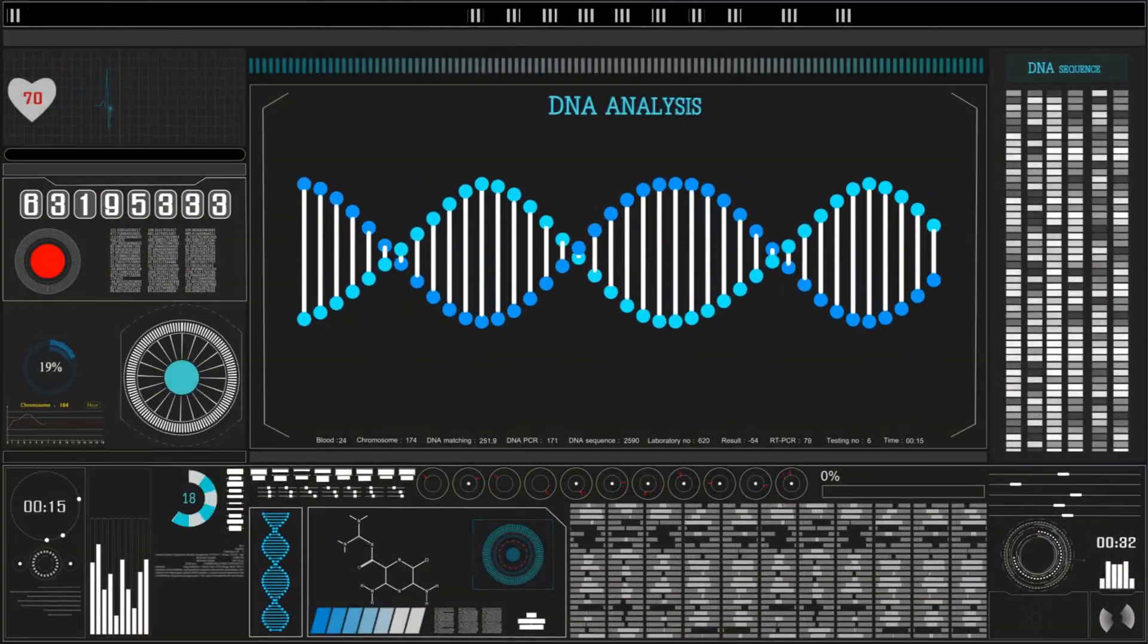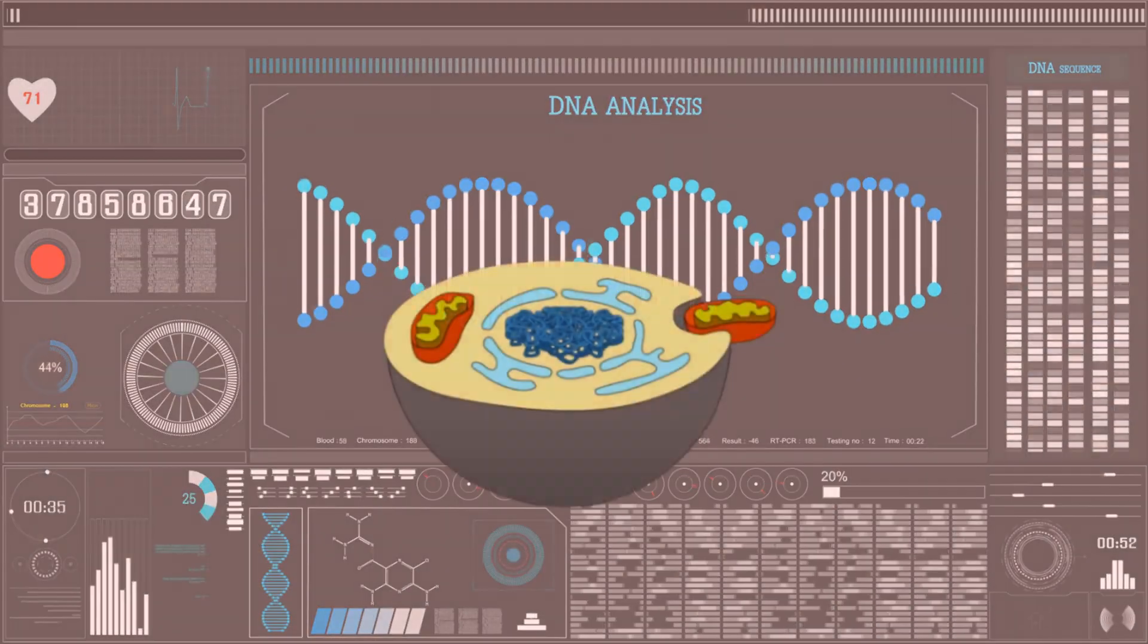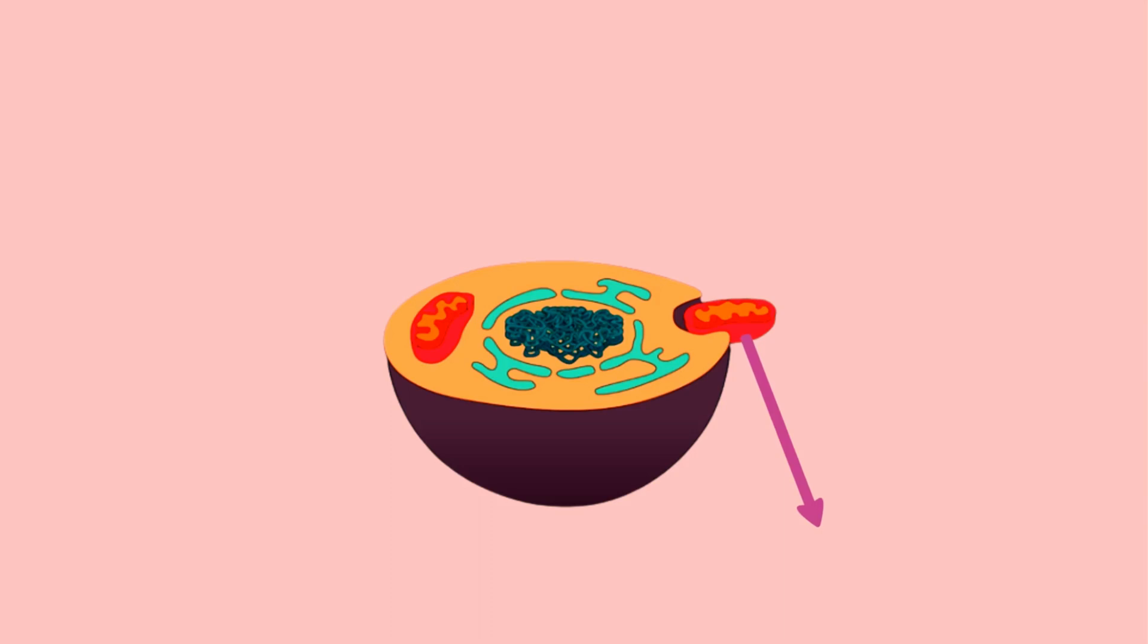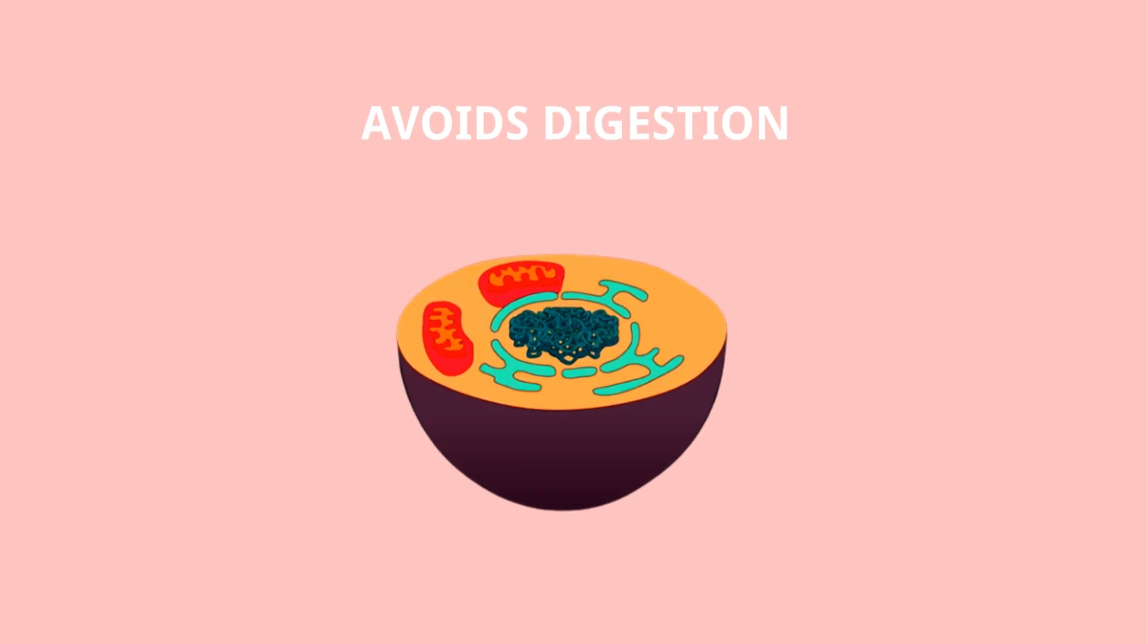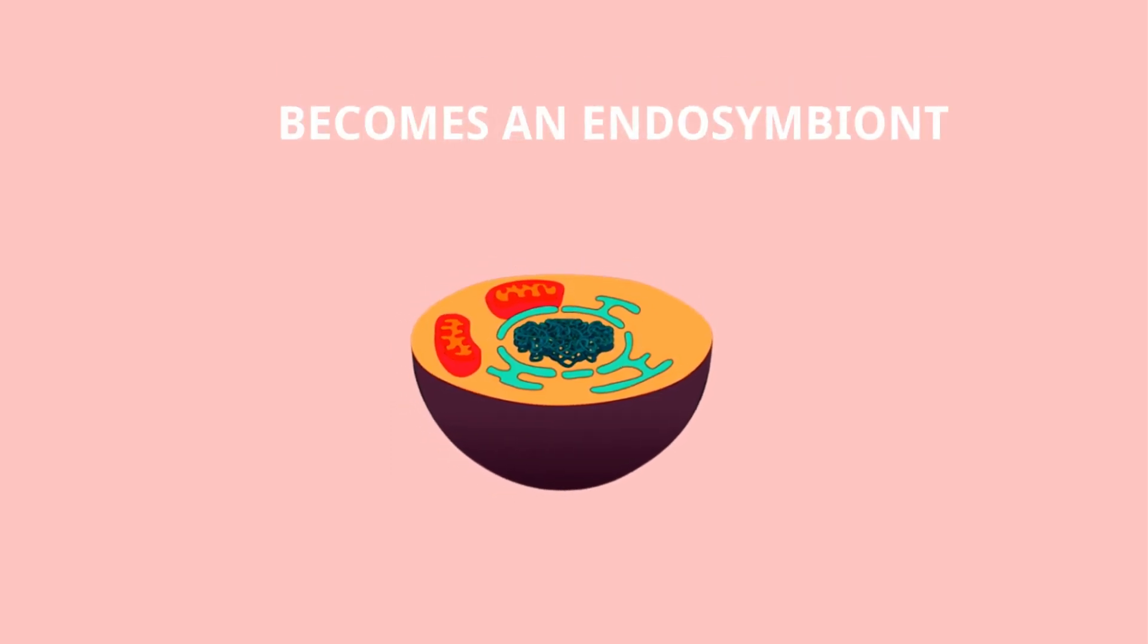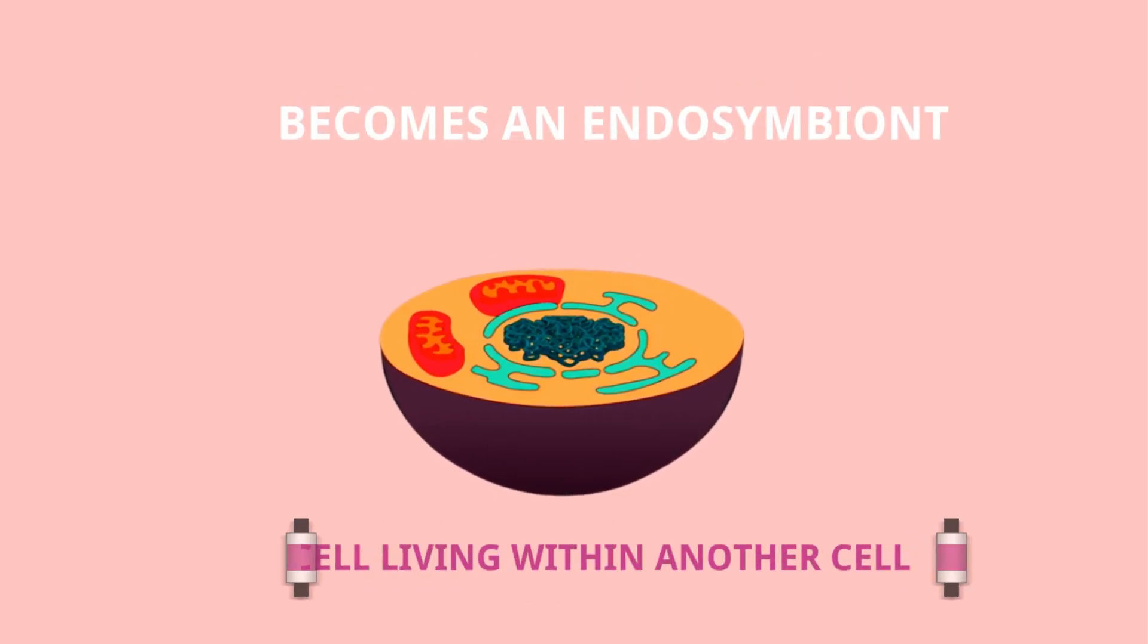Genomic sequencing of cells today indicates that this prokaryote was from a group of bacteria called the alpha proteobacteria. In any case, this cell avoids digestion and becomes an endosymbiont, in other words, a cell living within another cell.